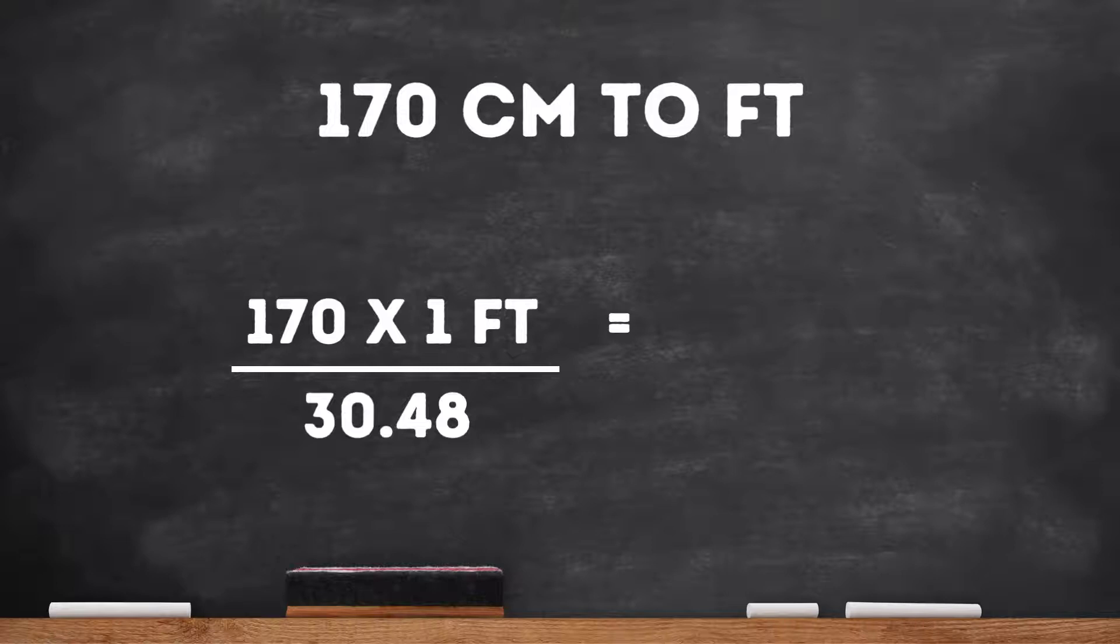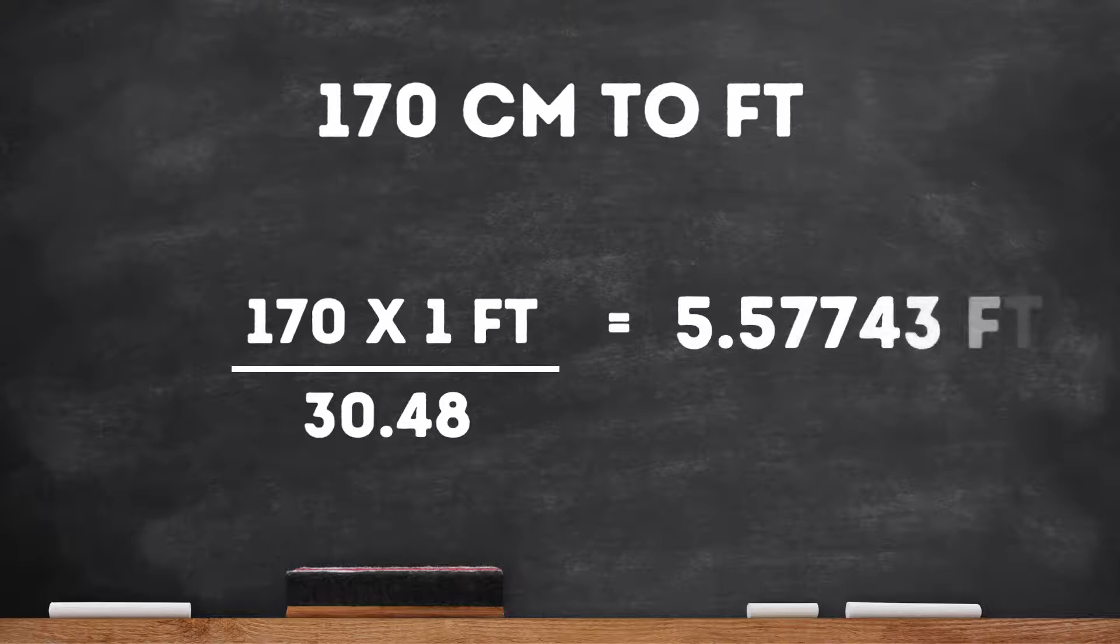All we have to do from here is divide 170 by 30.48. After you divide by hand or with a calculator we find that 170 centimeters is equal to 5.57743 feet.